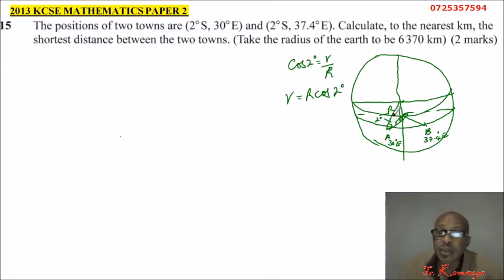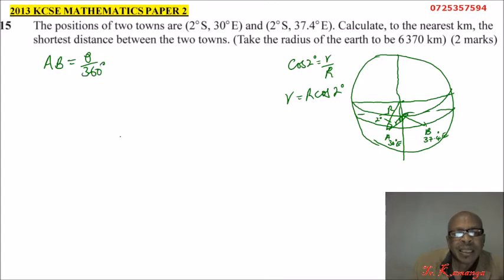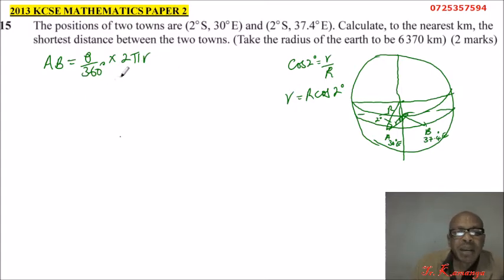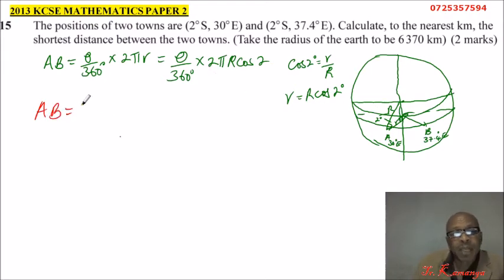We are at 2 degrees to the south. To get the distance between two points on the arc or circumference of the circle, we use the formula: AB equals theta over 360 degrees, multiplied by 2πr. Since we have found that small r equals R cosine of theta, we substitute accordingly.